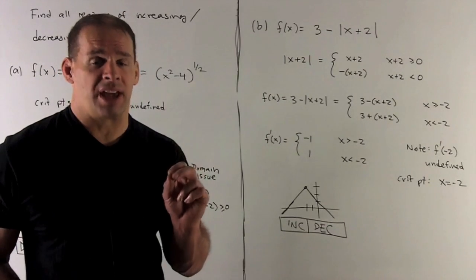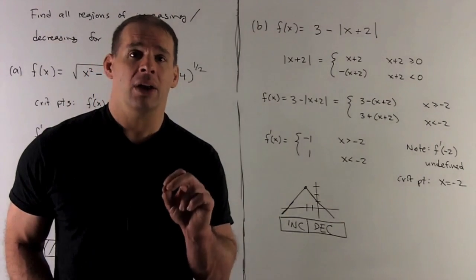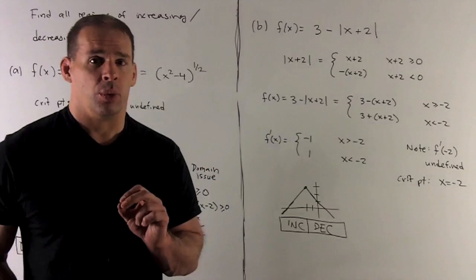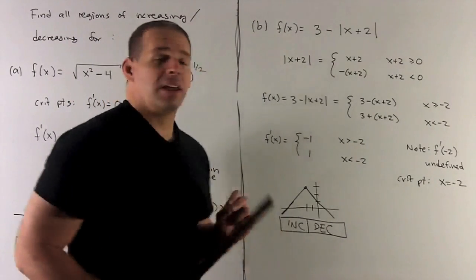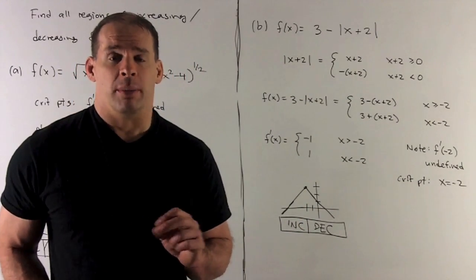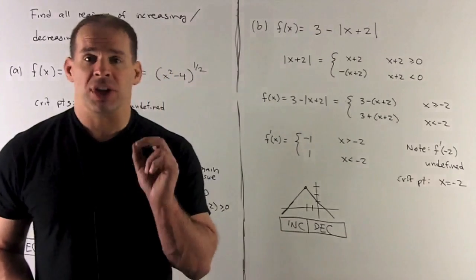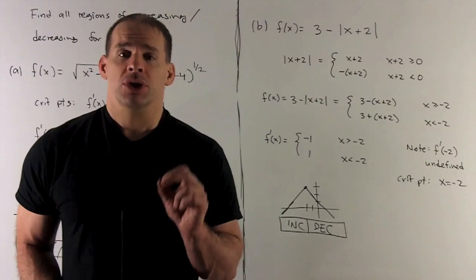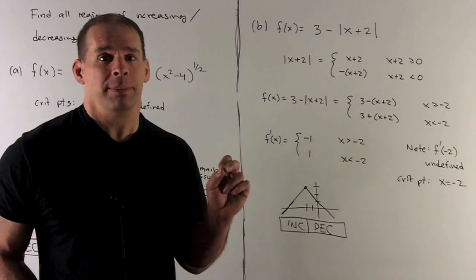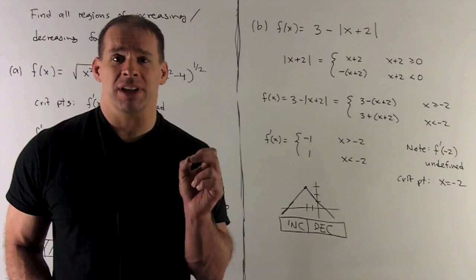Taking the derivative of each piece: for x ≥ -2, the derivative is minus 1; for x < -2, the derivative is 1. At x = -2, the left-side slope is 1 and the right-side slope is minus 1 — they disagree, so the derivative is undefined there. Looking at the graph, there is a corner at x = -2, so no tangent line can be fitted.